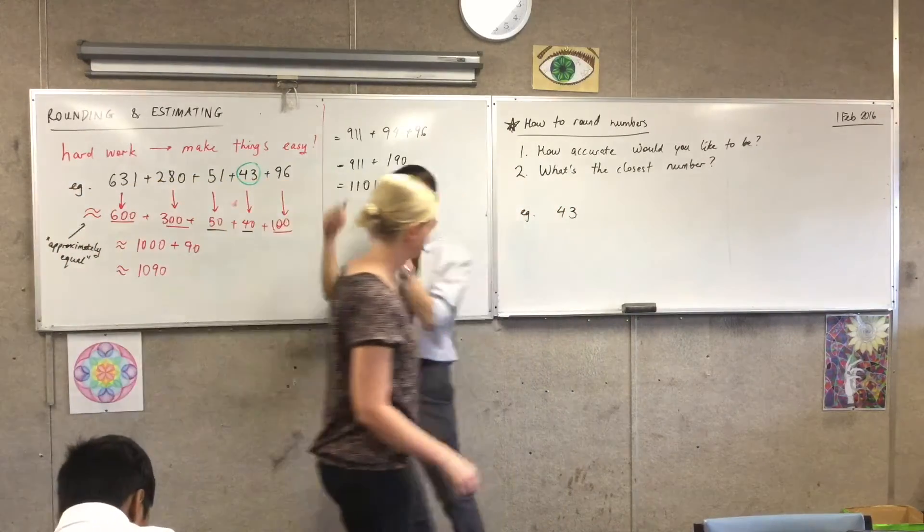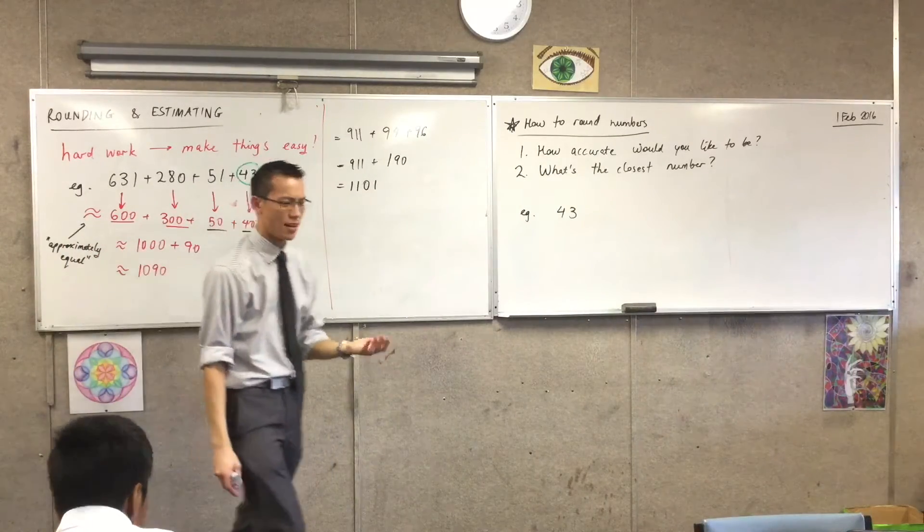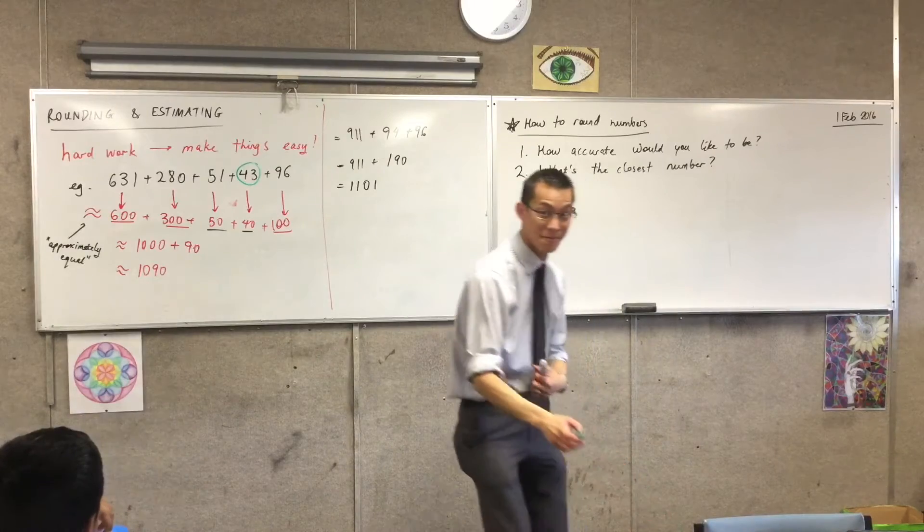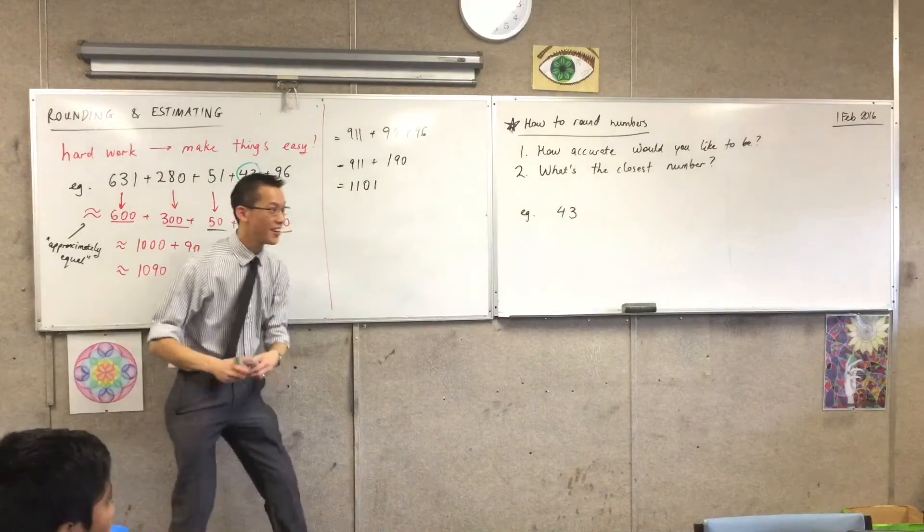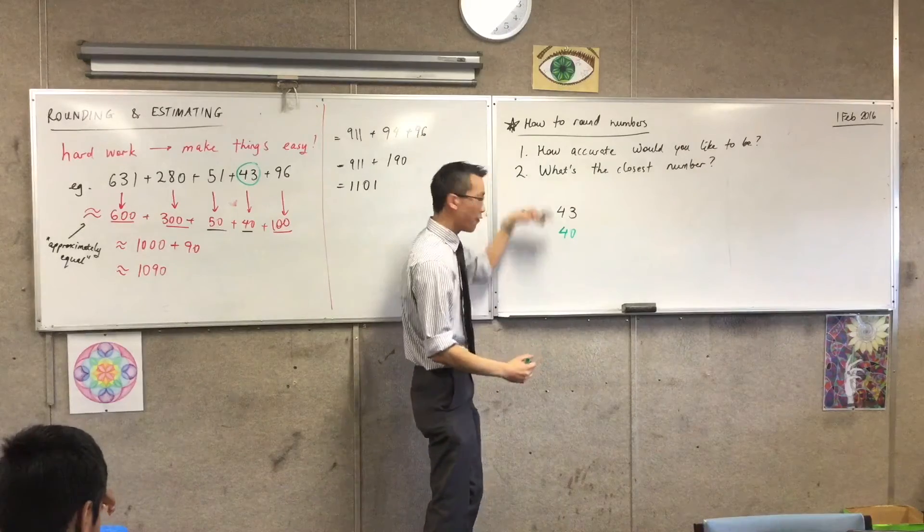There are two tens that are closest to 43. One's a bit smaller, and one's a bit bigger. What are those two numbers that are close to it? 40 and 50. Very good. So 40 is right here, down below, and 50 is above.